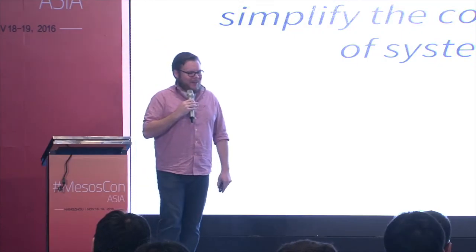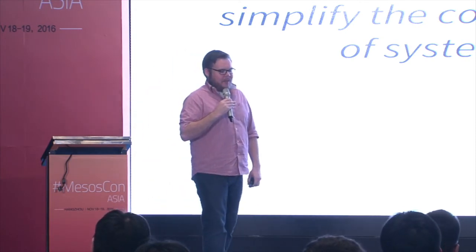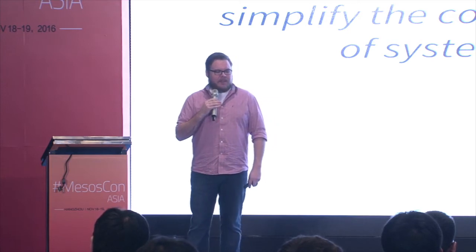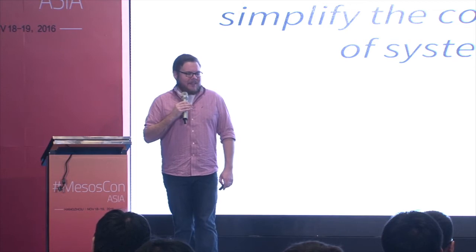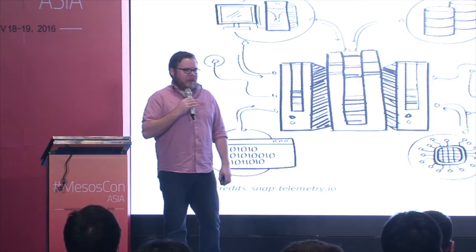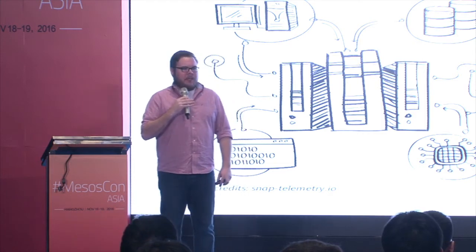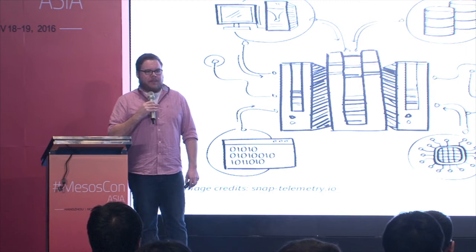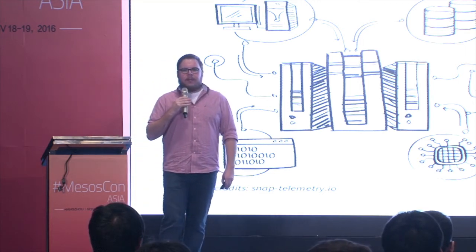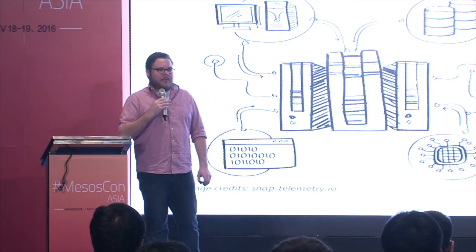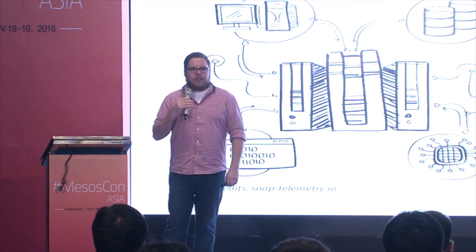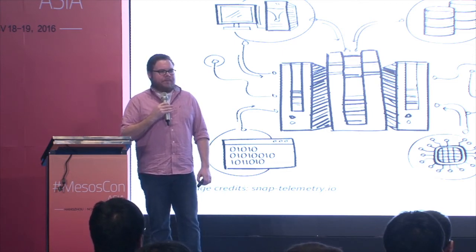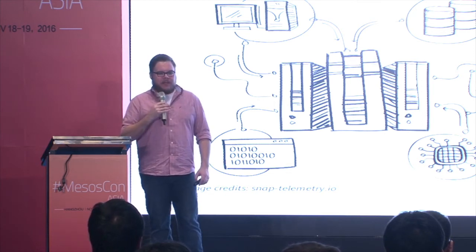The best way to describe Snap is from its project website: Snap is an open telemetry framework designed to simplify the collection, processing, and publishing of system data through a single API. In practice, it's a plugin-based architecture for collecting, processing, decorating, and ultimately publishing metrics to an end system — whether that's KairosDB, InfluxDB, or some other time series database. It allows you to decouple the publishing of metrics from the collection, and do processing like aggregating or taking the moving average of specific values.